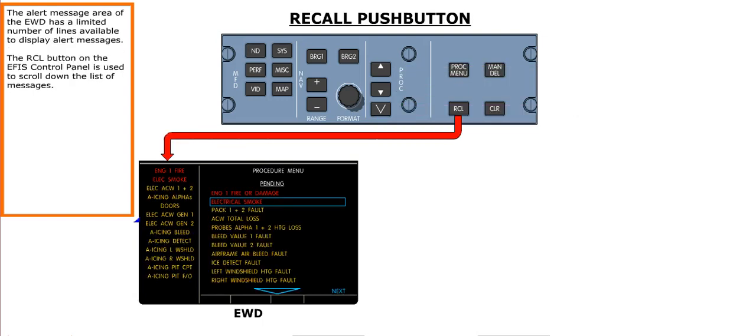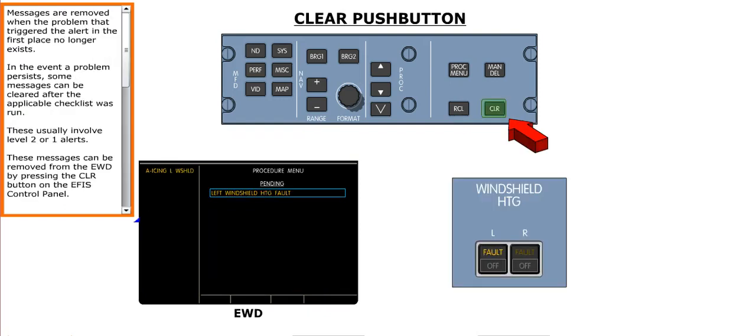The alert message area of the EWD has a limited number of lines available to display alert messages. The Recall button on the EFIS control panel is used to scroll down the list of messages.